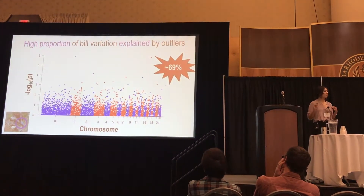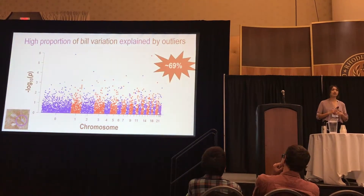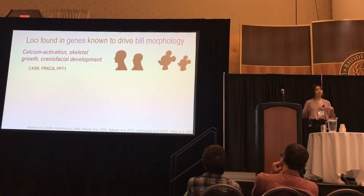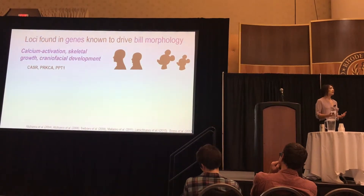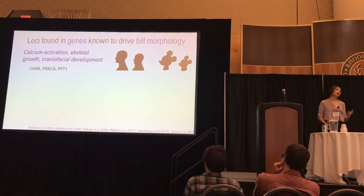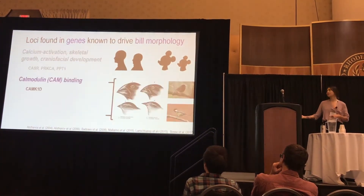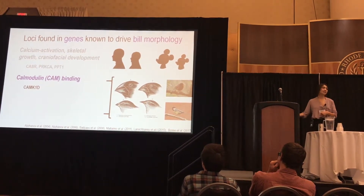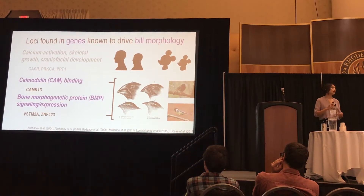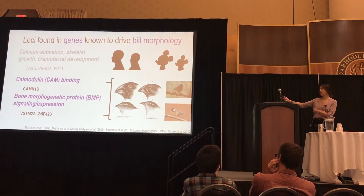And on some models, depending on which ones we're referring to, we get it to explain up to 69% of the variation observed in these bill sizes. And again, when you look at those loci and you investigate their functions or where they are, they are in genes responsible for craniofacial development in a number of different taxonomic groups — including the calmodulin binding pathway, BMP, as well as the WNT signaling pathway and the Notch pathway, which also interacts with calmodulin and BMP.